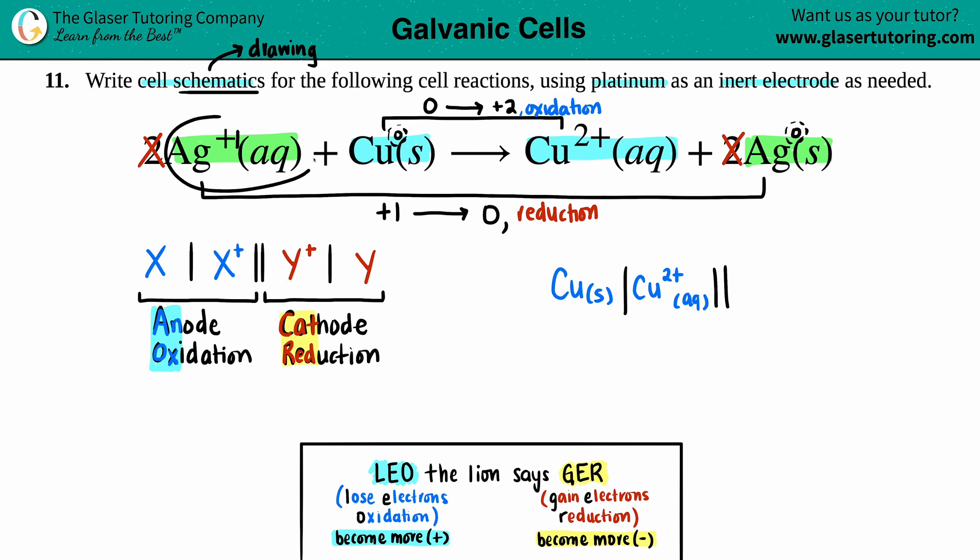The reactant for the reduction is Ag⁺, so that's what I'm going to put. Notice how I'm not putting how many I have, because in your cell schematic it doesn't matter how many you have. You're just going down to the bare bones of just who you have and what you're turning into. Then the product side would be just the Ag solid.